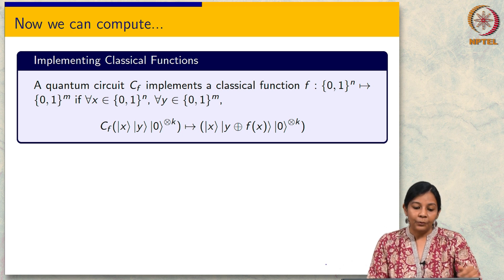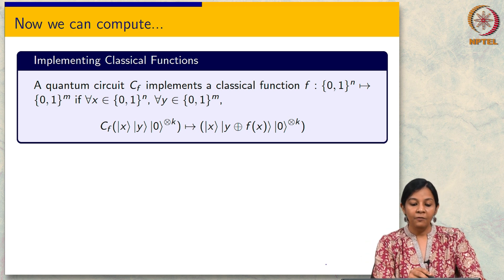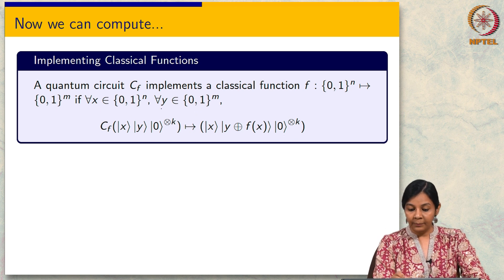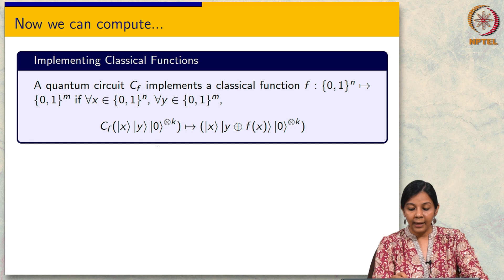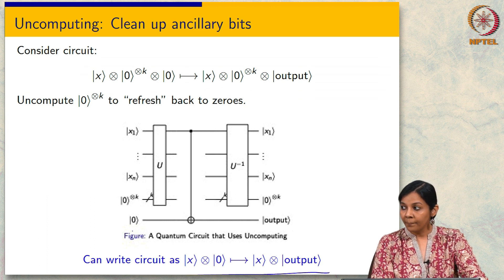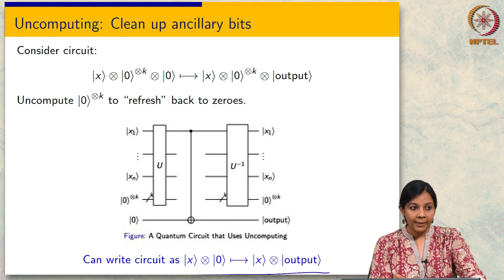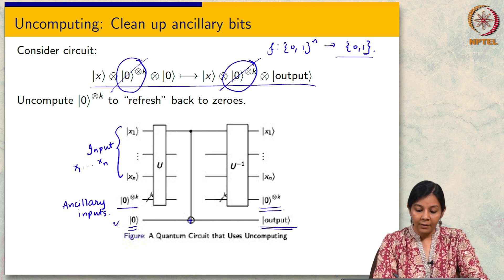Now I claim we can compute. Let us first define what implementation of a classical function means. We will say that a quantum circuit C_f implements a classical function f going from n bits to m bits if for any x and y we have that C_f(x, y, 0^k) goes to (x, y⊕f(x)). Previously we were thinking of y as 0. We are thinking of a Boolean function and we are thinking of y as 0.